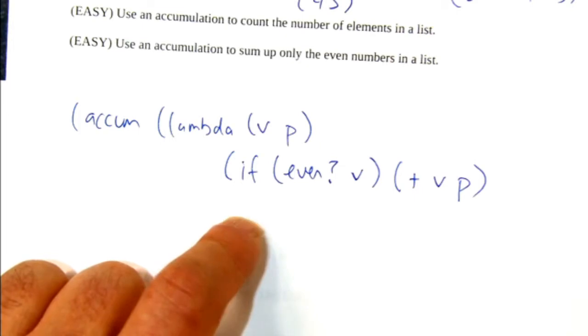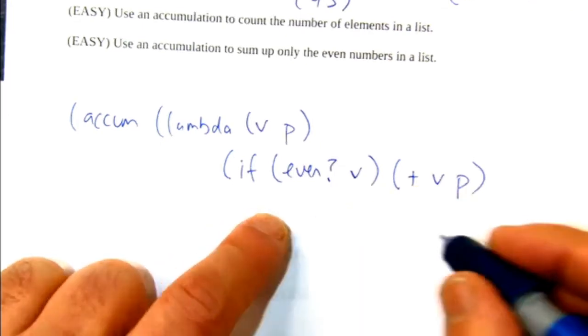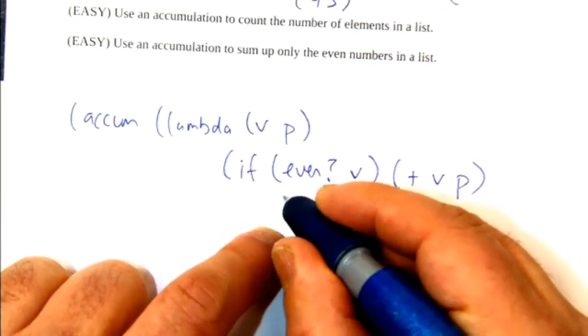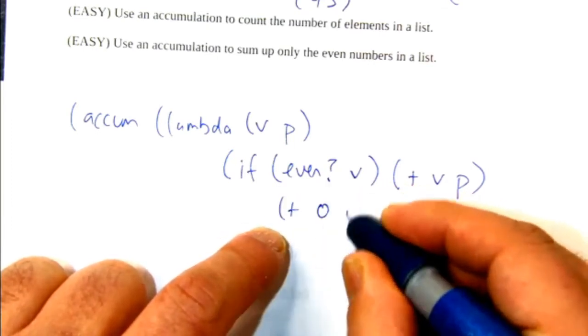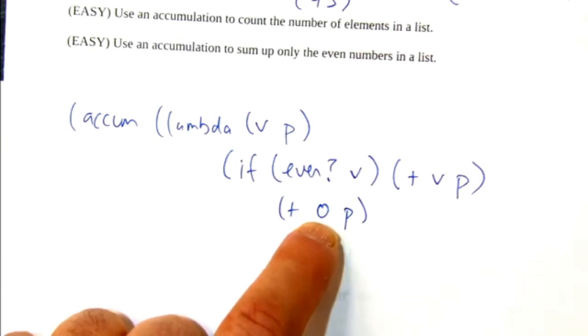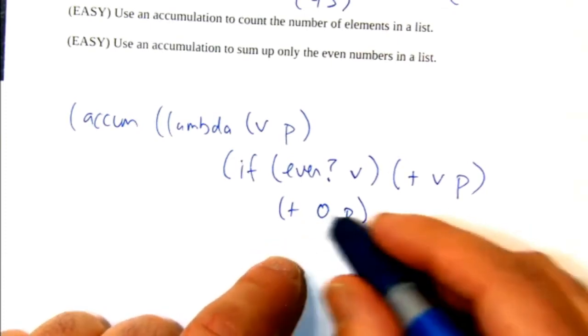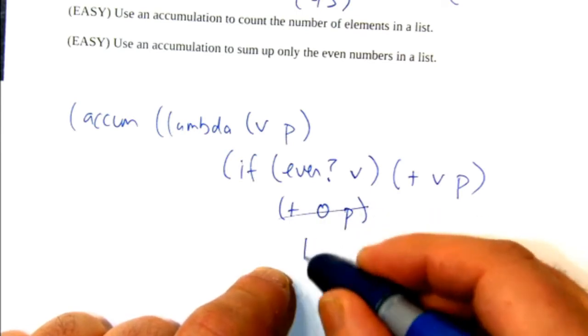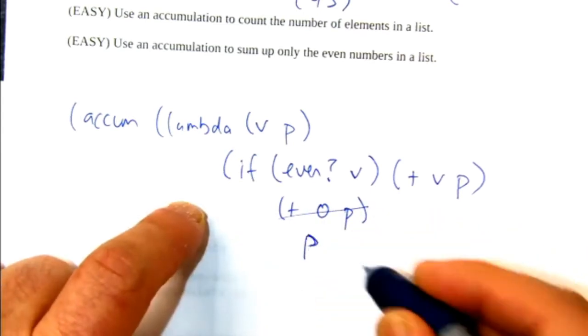If V is odd, then what do we do? Yeah, I saw a few people write plus 0 P, like where this is the placeholder. Like instead of adding V, we're going to add 0. And then, oh yeah, you can just say P. That's what the result of adding 0 to P is.